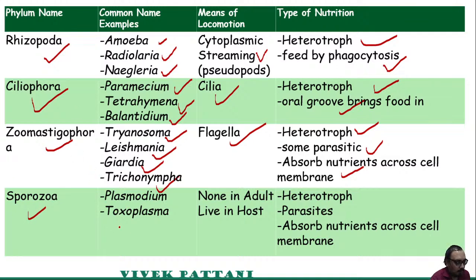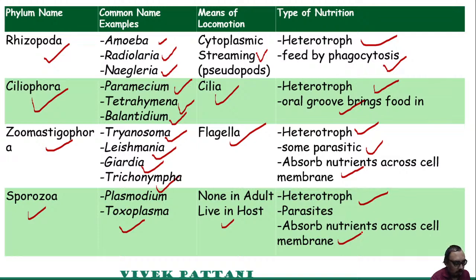The last phylum is Sporozoa. Common examples are Plasmodium and Toxoplasma. Most sporozoans are parasites; they are heterotrophs and absorb nutrients across the cell membranes. They basically live in a host.